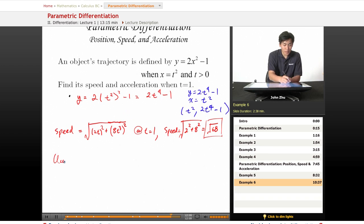And the acceleration, of course, equals the second derivative. So the second derivative here is 2, and the second derivative is 24t squared.